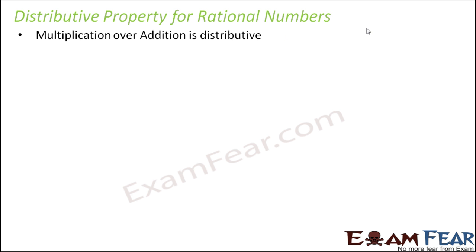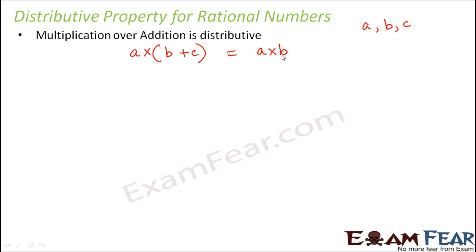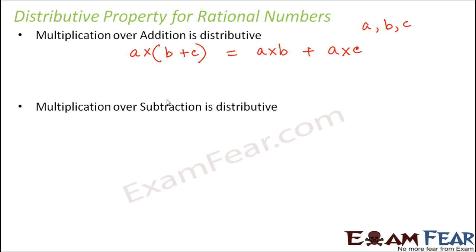If we have three rational numbers a, b, and c, then a multiplied by (b plus c) can be written as a multiplied by b plus a multiplied by c. This is called the distributive property of multiplication over addition, and this relation holds true for all rational numbers.